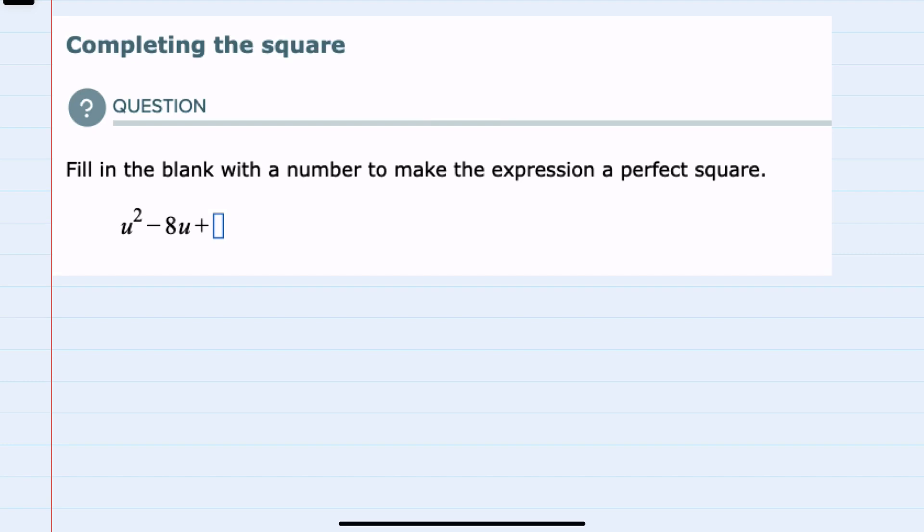In this video, I'll be helping you with the Alex problem type called completing the square. We're asked to fill in the blank with a number to make the expression a perfect square. And here, a perfect square would be a binomial being squared.